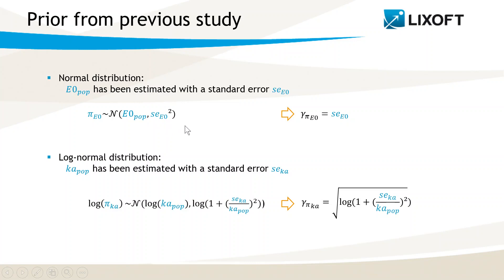But if the parameter has a log-normal distribution in the previous study and the current model, like Ka for instance, then the prior distribution is a log-normal distribution as well, and it is defined by giving the typical value as a prior, so the estimate for Ka-pop, and the standard deviation of the corresponding normal distribution. So in that case, the standard error SEK needs to be transformed like this to give the standard deviation γ.